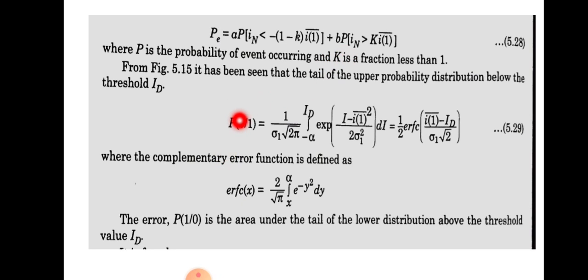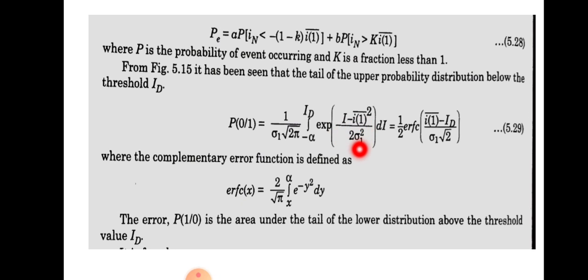The probability of receiving 0 when 1 is sent is given by: P(0|1) = (1 / (σ₁√(2π))) · ∫(−∞ to id) e^(−(i − Ī₁)² / (2σ₁²)) di, where id is the threshold value, Ī₁² is the mean square noise value when 1 is sent, and σ₁ is the variance for bit 1.